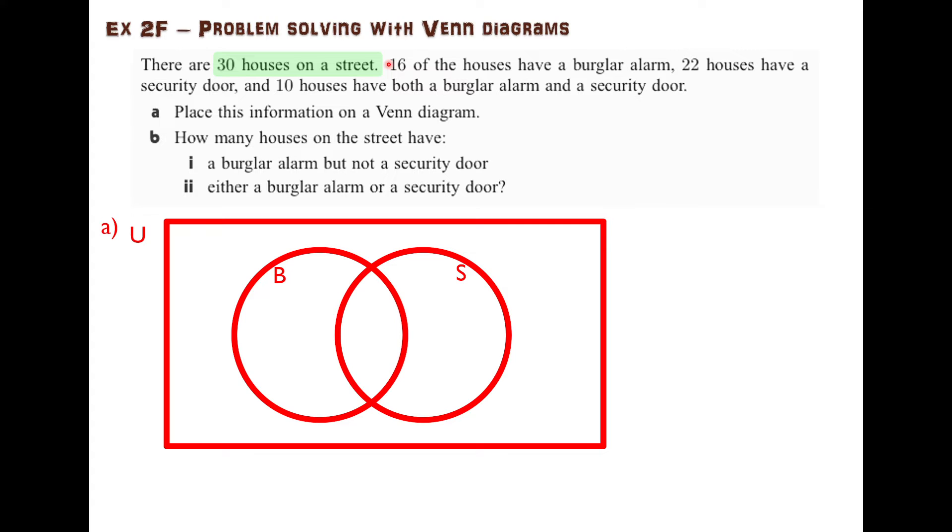For example, writing them in set notation. There are 30 houses on the street. This is all of the houses. Some have a burglar alarm, some have a security door, some don't have anything. In total, the universe is 30. The number of elements in the universe is 30. There are 30 houses we're considering.